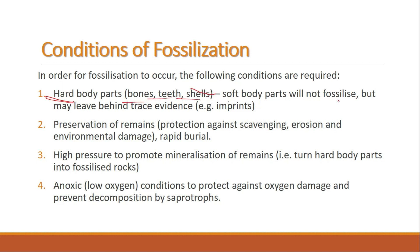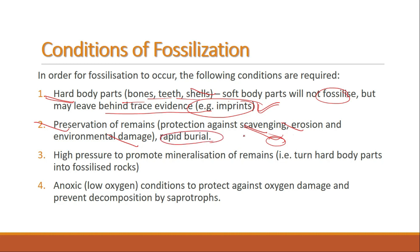Soft body parts will not fossilize but may leave behind trace evidence such as imprints, which we will look at later. The second condition is preservation of remains — meaning protection against scavenging, erosion, and environmental damage. Once the soft body part decays and the hard remains are exposed to environmental conditions, they will start eroding. So rapid burial is needed as soon as the organism dies, in order to protect the remains.